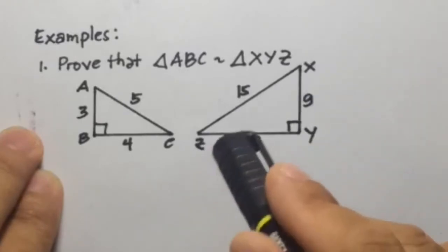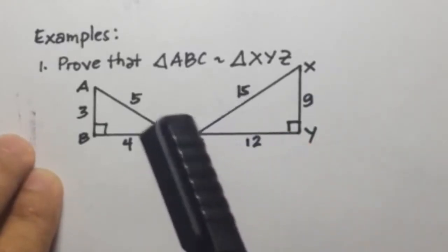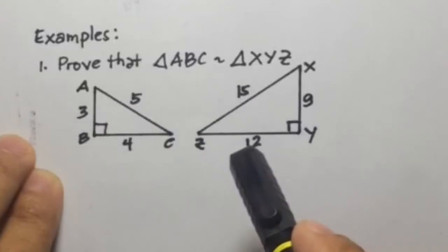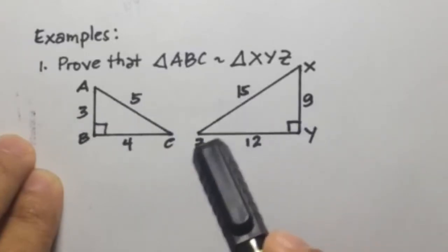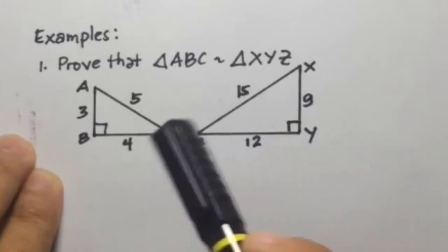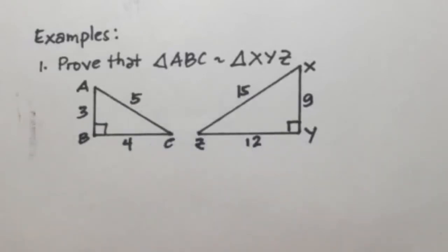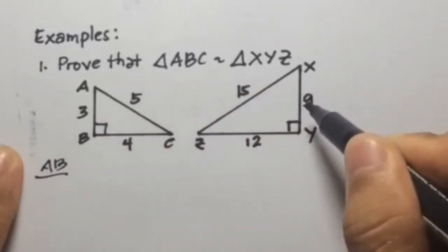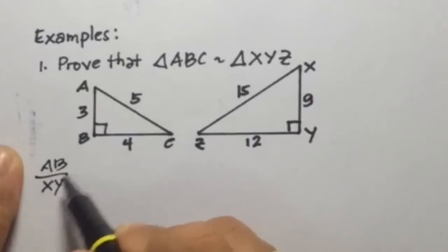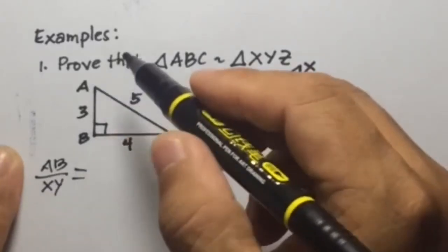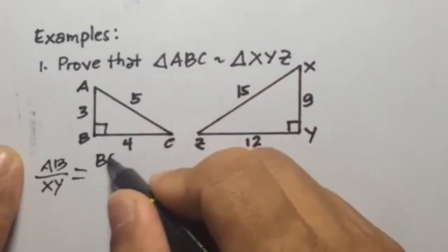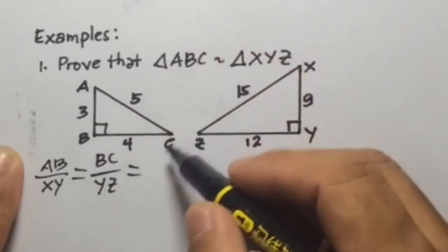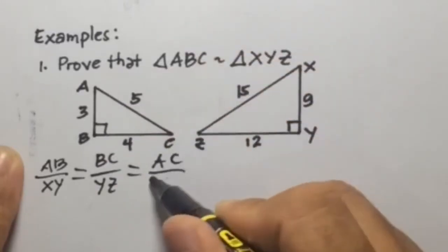So to prove this one, what we're going to do is have the ratio of each corresponding side and determine if they are equal or proportional. If they are proportional, then we can say that the two triangles are similar. So we're going to have AB over XY equal to BC over YZ, and is it equal to AC over XZ.